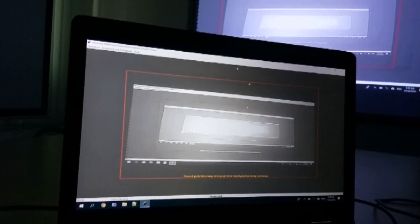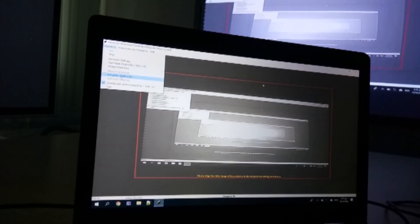Lepas dah pastikan image masuk dalam petak merah, kita akan pergi ke operation dan tekan automatic calibration.